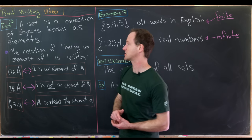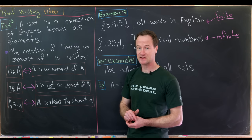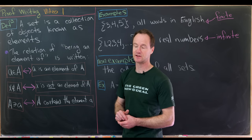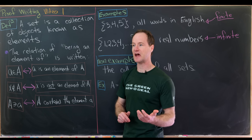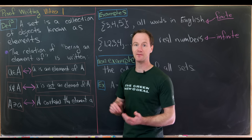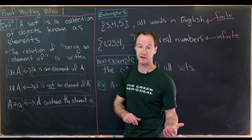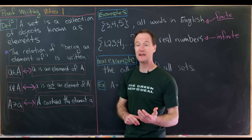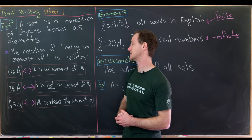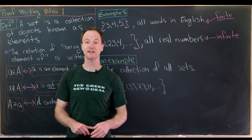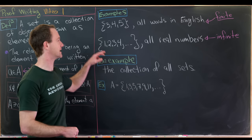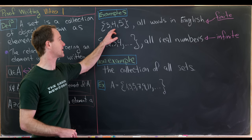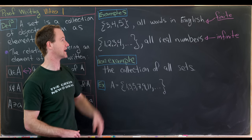A set is a collection of objects, and those objects are known as elements. The important thing here is the elements can really be anything we'd like. They could be numbers, they could be letters, they could even be sets themselves. Let's look at some basic examples. This would be the set containing 3, 4, and 5.